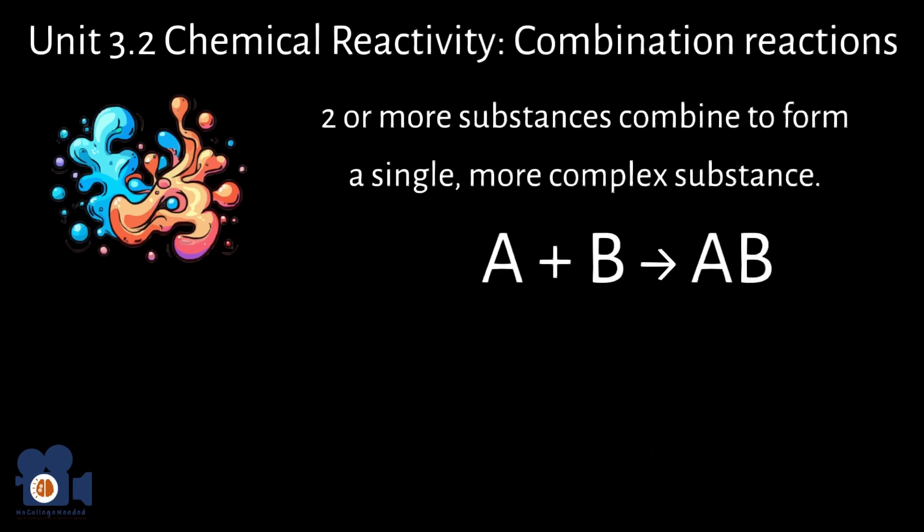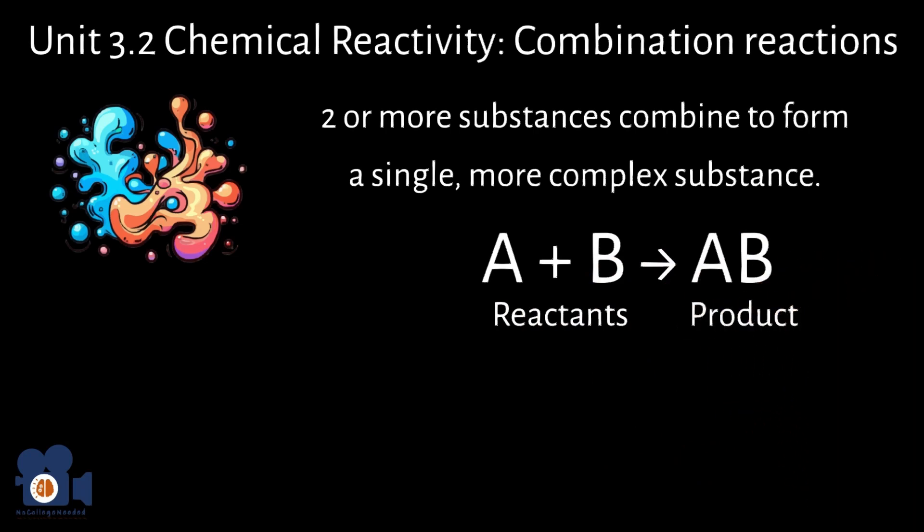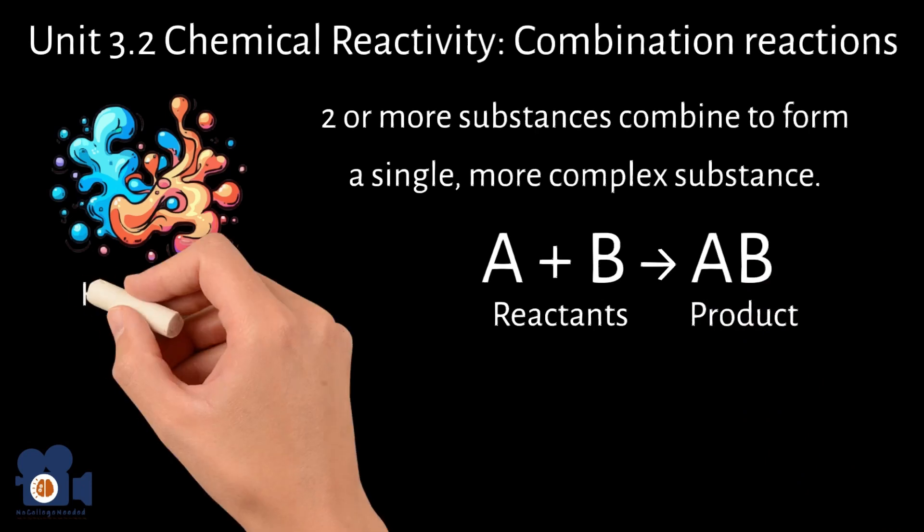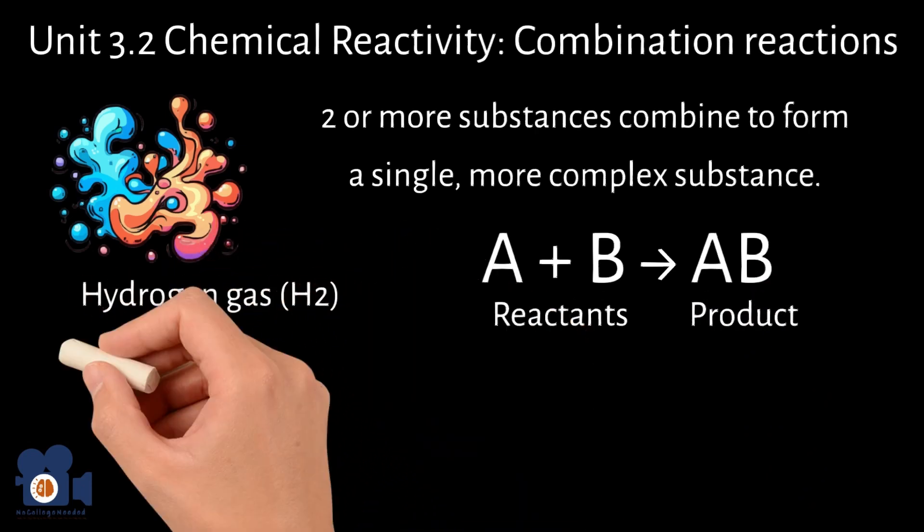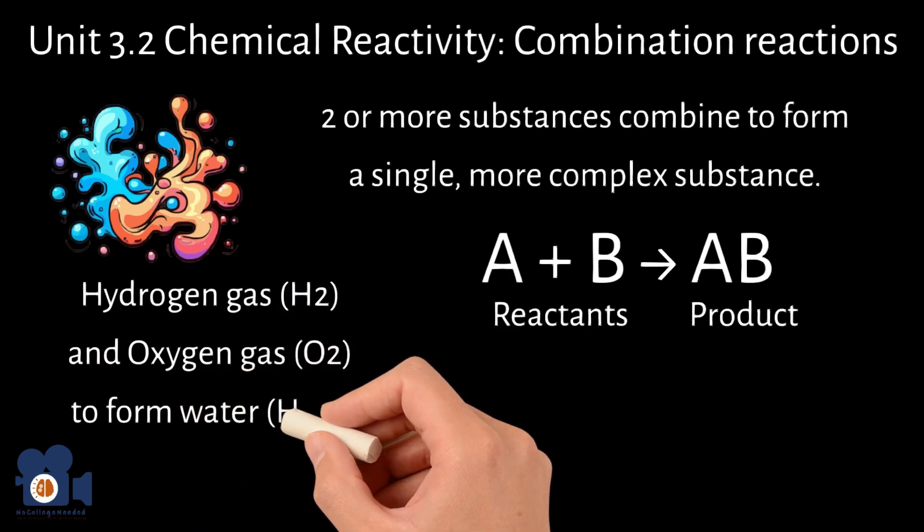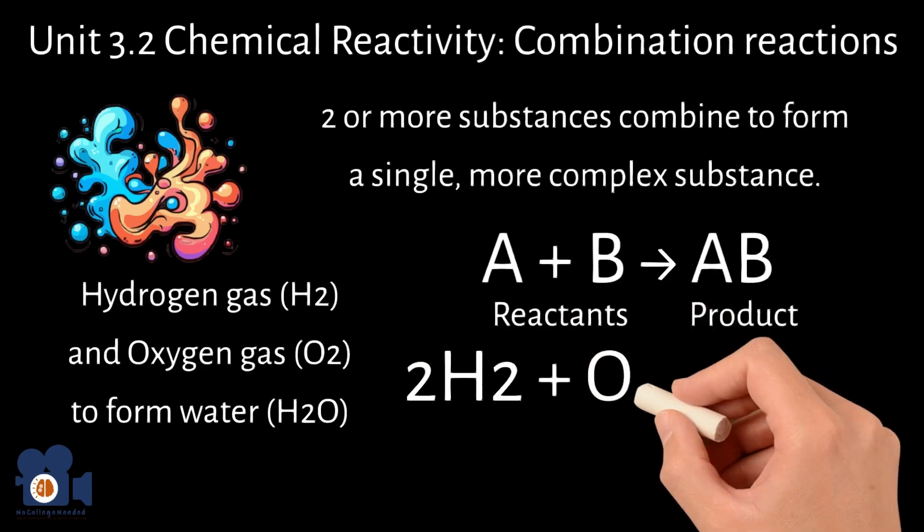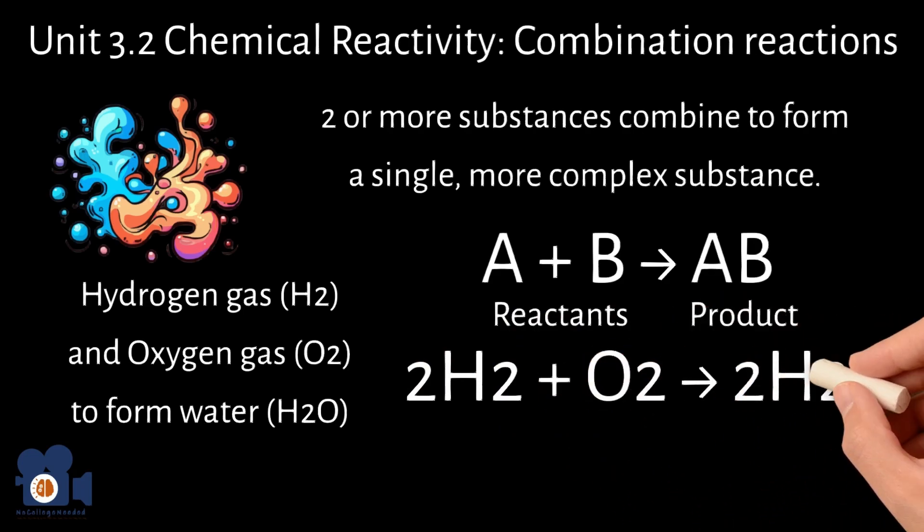In this equation, A and B represent the reactants, and AB represents the product. One common example of a combination reaction is the reaction between hydrogen gas, H2, and oxygen gas, O2, to form water, H2O. The equation for this reaction is 2H2 plus O2 going to 2H2O.